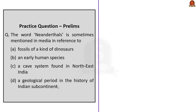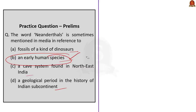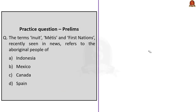The next question is a direct question: 'The word Neanderthals is sometimes mentioned in media in reference to — Option A fossils of a kind of dinosaurs, Option B an early human species, Option C a cave system found in northeast India, Option D a geological period in the history of Indian subcontinent.' The correct answer is Option B — an early human species, because Neanderthals are members of a group of archaic humans. The next question asks about Inuit, Métis and First Nations. From our discussion, these are the aboriginal peoples of Canada, so the correct answer is Option C.